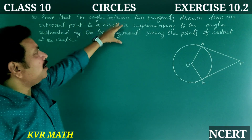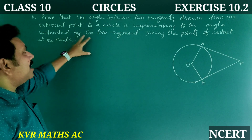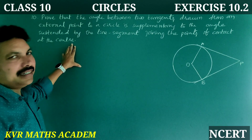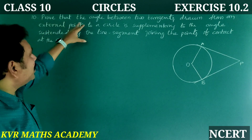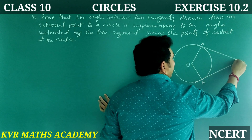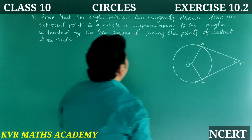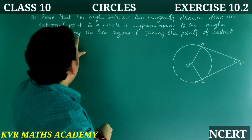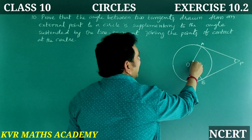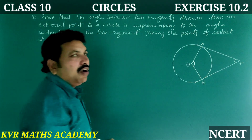10th question: Prove that the angle between two tangents drawn from an external point to a circle is supplementary to the angle subtended by the line segment joining the points of contact at the center. That is, angle APB plus angle AOB is equal to 180 degrees.